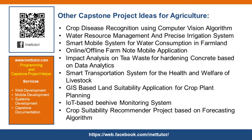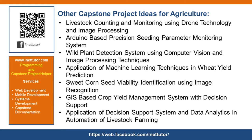Smart transportation system for the health and welfare of livestock. GIS-based land suitability application for crop plant planning. IoT-based beehive monitoring system. Crop suitability recommender project based on forecasting algorithm. Livestock counting and monitoring using drone technology and image processing. Arduino-based precision seeding parameter monitoring system. Wild plant detection system using computer vision and image processing techniques. Application of machine learning techniques in wheat yield prediction. Sweet corn seed viability identification using image recognition. GIS-based crop yield management system with decision support. Application of decision support system and data analytics and automation of livestock farming.